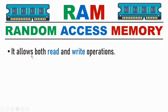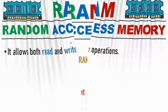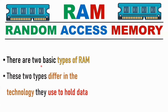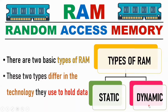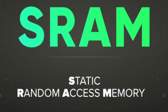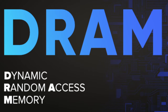RAM allows both read and write operations. There are two basic types of RAM that differ in the technology they use to hold data. They are Static and Dynamic RAM — SRAM is Static Random Access Memory, and DRAM is Dynamic Random Access Memory.